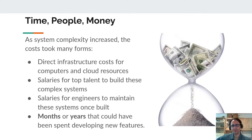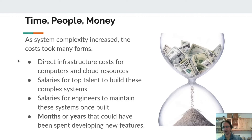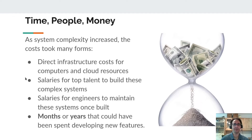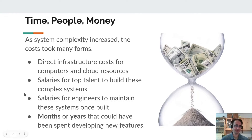This is what the problems of a business boil down to: time, people, and money. As system complexity increases, there's the direct infrastructure cost for computers and cloud resources. Cloud computing is easy to set up, but it's very easy to run up the bill quickly as systems require a lot of computational load. To build and maintain these systems, you have to hire people — and these people aren't cheap. Salaries can be quite high, and you still need engineers just to maintain the systems and deal with problems related to load.